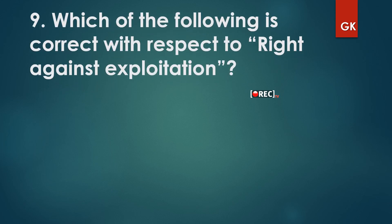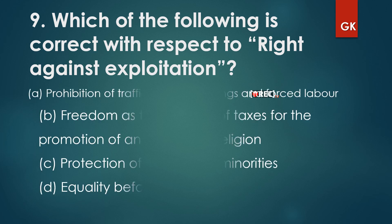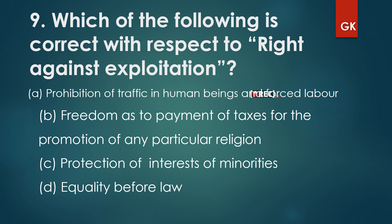Question 9: Which of the following is correct with respect to the right against exploitation? Options include: prohibition of traffic in human beings and forced labor; freedom from payment of taxes for promotion of any particular religion; protection of interests of minorities; or equality before law. The correct answer is: prohibition of traffic in human beings and forced labor — this is what the right against exploitation deals with.